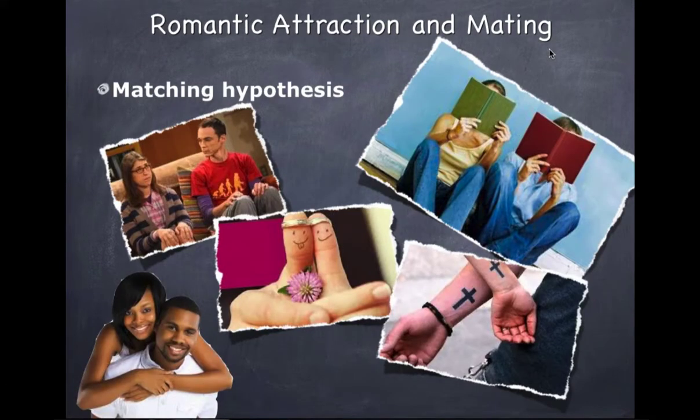When we consider romantic attraction and mating, there's the matching hypothesis: people tend to have lovers or spouses who are similar to themselves in physical attractiveness and other assets. Mismatched couples are more likely to end the relationship, and fear of rejection keeps many from pursuing mismatched attractiveness. Similarities have the most influence when it comes to personality, physical traits, intelligence, religion, ethnicity, socioeconomic status, and attitudes. The reality is that opposites don't necessarily attract — what draws people together most are similarities.